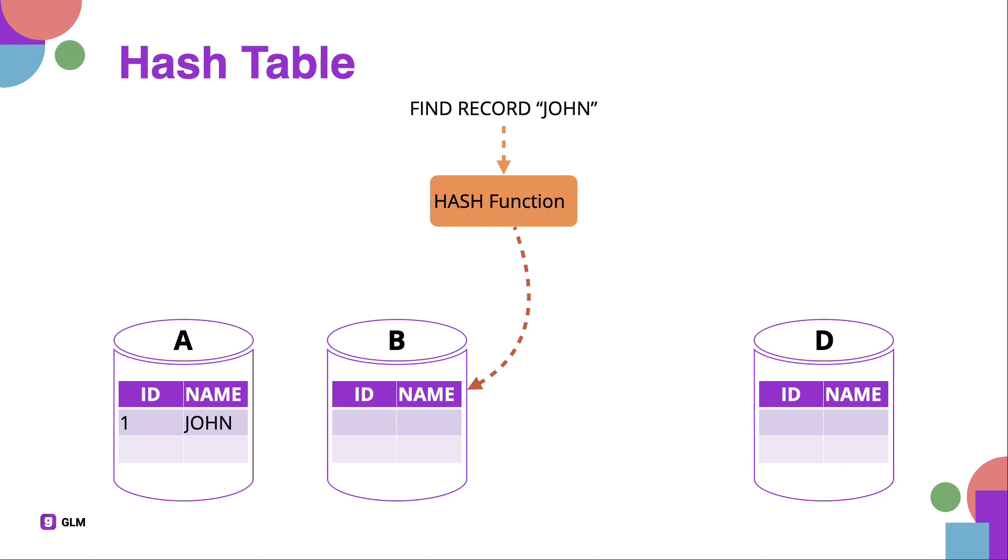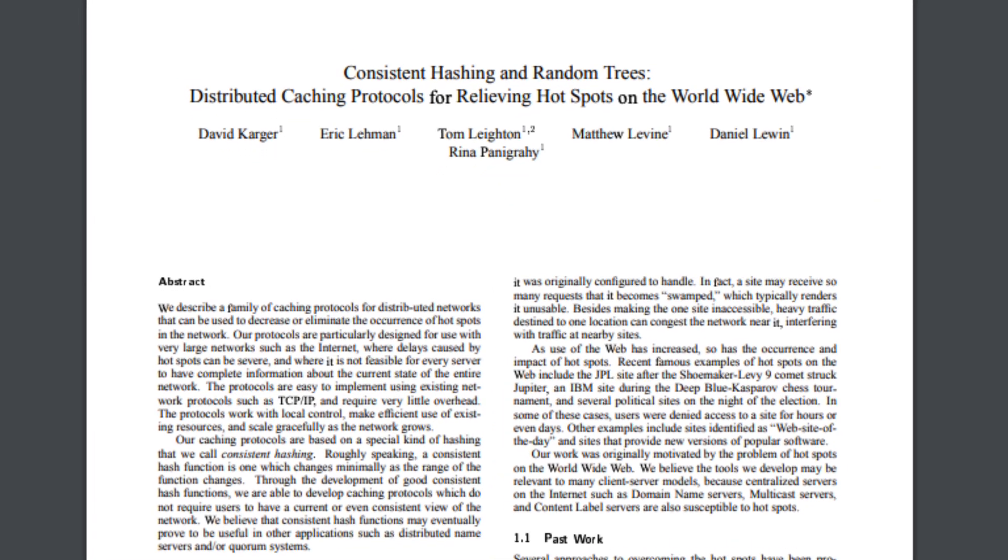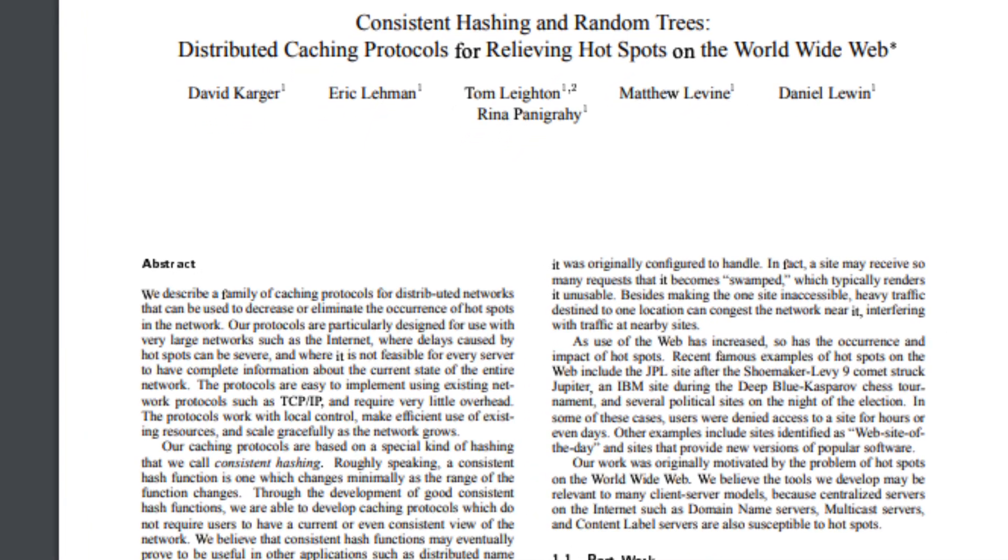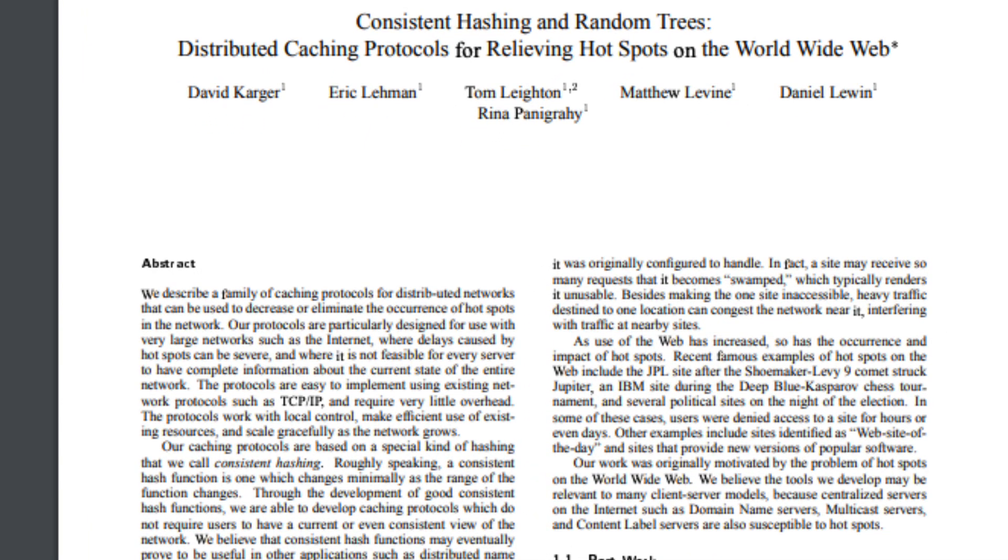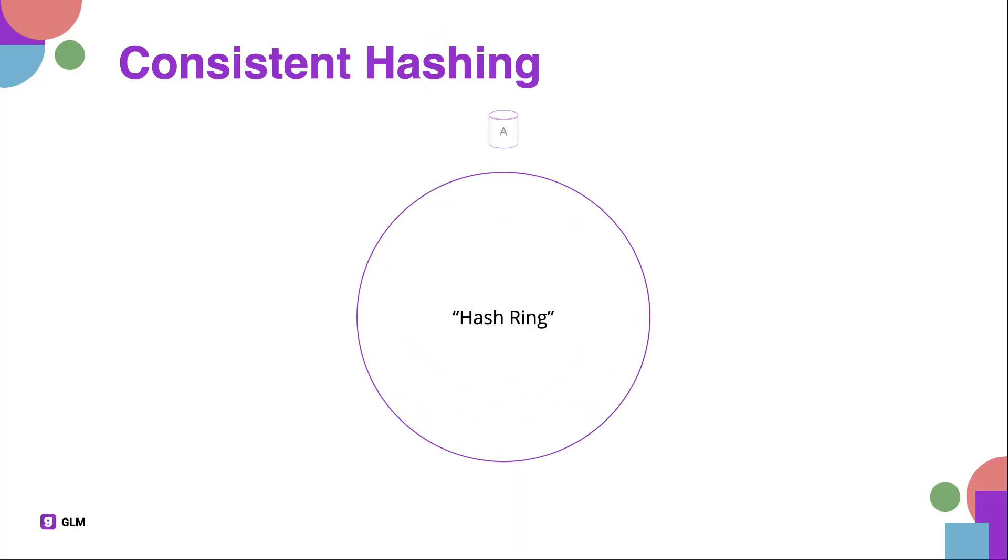In 1997, David Karger came up with a very smart solution to this problem called consistent hashing. Let's visualize it using the famous hash ring. Imagine you have a circle and you sprinkle some servers around. Instead of saying how many servers we have, now let's set the maximum number of servers to be 3000. It can be any number you want.